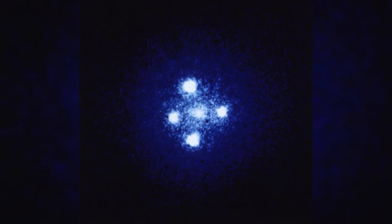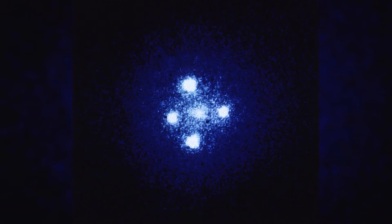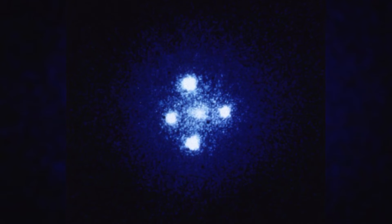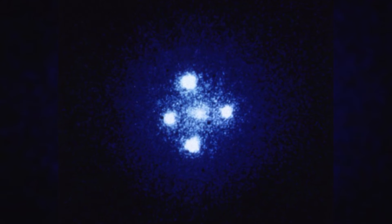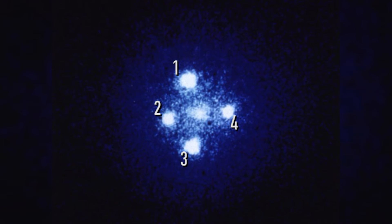Gravitational lensing is another effect predicted by general relativity, but not by Newton. Take this photograph. Each blue dot is a giant quasar, a light-emitting celestial body billions of light-years away. And in the centre is a galaxy millions of light-years away. The question is, how many quasars can you see? Easy, right? One, two, three, four. Well, actually, there's only one quasar in this photo.